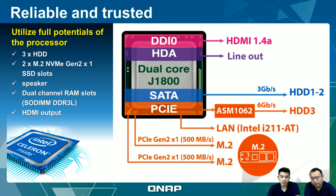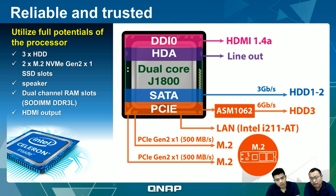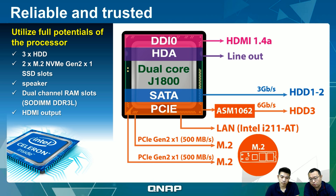The third hard drive slot comes from a PCIe-to-SATA controller — specifically the ASMedia ASM1062 chip. For the LAN port, it uses a PCIe-to-Gigabit LAN based on the Intel i211 controller, which is often used in gaming motherboards like ASUS ROG for high performance and CPU offloading. The two M.2 SSD slots are directly connected via PCIe channels, with each slot offering PCIe Gen 2x1 up to 500 Mbps transfer speed.